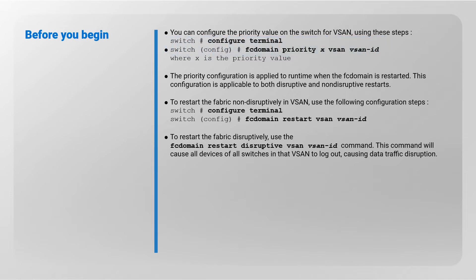The priority configuration is applied to runtime when the FC domain is restarted. This configuration is applicable to both disruptive and non-disruptive restarts. To restart the fabric non-disruptively, enter configuration mode and run 'fc domain restart vsan <vsan-id>'. To restart the fabric disruptively, use 'fc domain restart disruptive vsan <vsan-id>'. This command will cause all devices on all switches in that VSAN to log out, causing data traffic disruption.